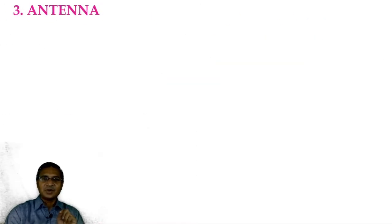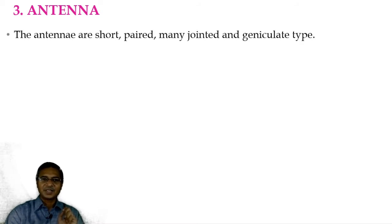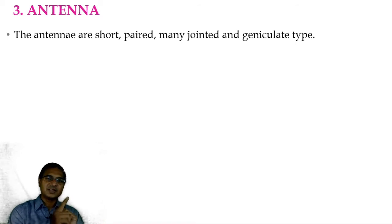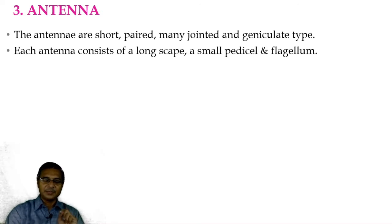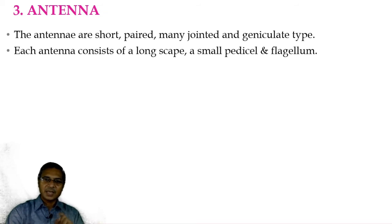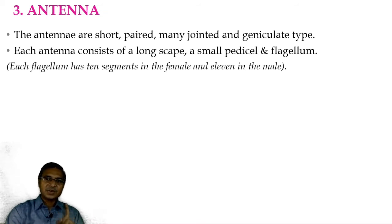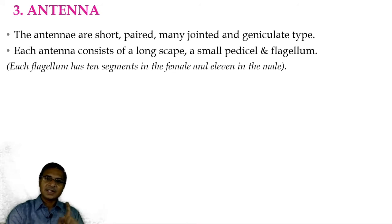The third part located in the head region is the antenna. The antennae are short, paired, many-jointed, and geniculated type — meaning somewhat elbow-shaped, not straight, somewhat curved. This type of geniculate antennae is present in honeybees and ants also. Each antenna consists of a long scape, a small pedicel, and a flagellum. Each flagellum has 10 segments in the female and 11 in the male. In female — that is the worker bees as well as the queen bee — 10 segments of the flagellum are present, while 11 are observed in the male, that is the drone.